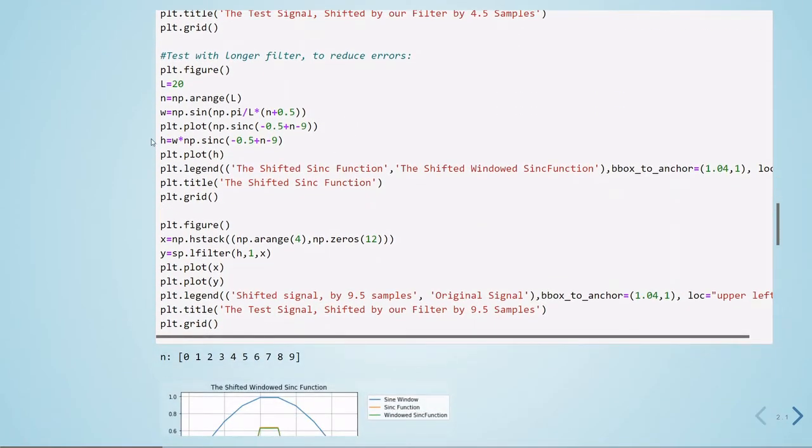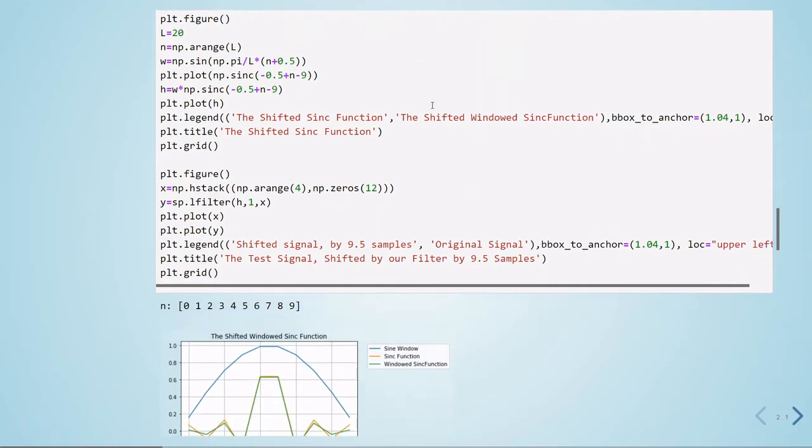So this is our resulting impulse response. We are multiplying our window by our sinc function. And we are plotting now.